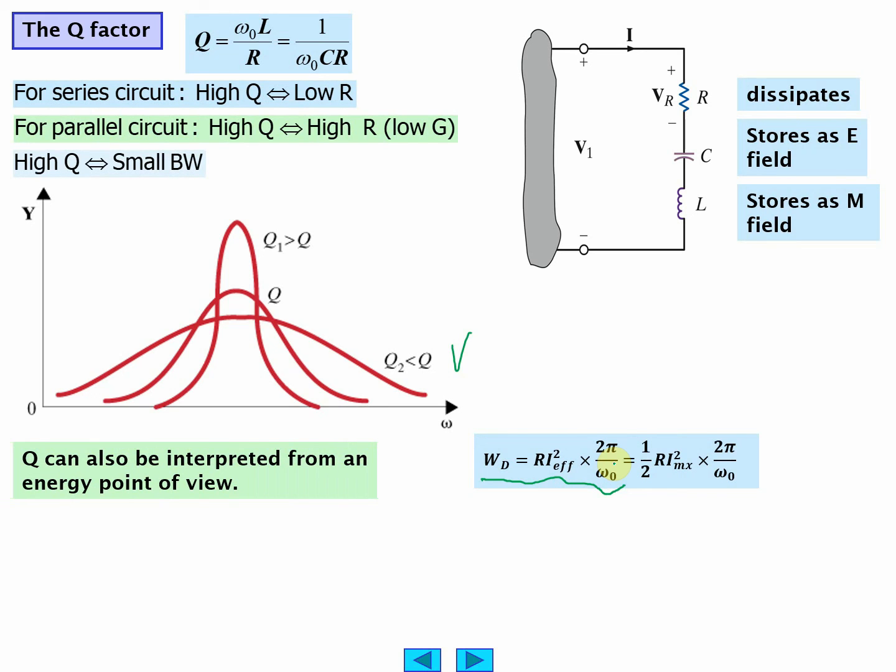Okay, for parallel circuits, when resistance is high you have a high Q. For series circuits, this should be low. For parallel circuits, it should be high. Just they're flip-flopped from each other.